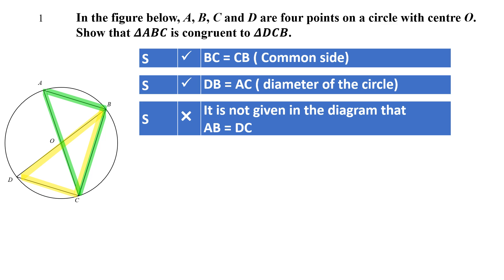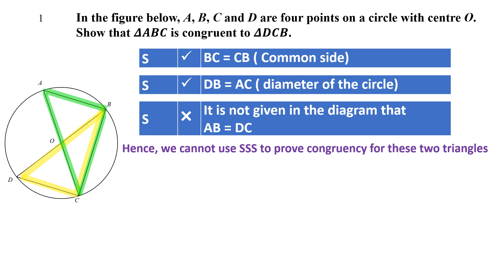From having two sets of equal sides, some of you may think we can use SSS to prove the two triangles are congruent. However, we can't do that because we are not given — in the diagram we are not told that the length of AB is equal to DC. So therefore we cannot use SSS to prove congruency for these two triangles. That leaves us with RHS, ASA, or SAS.